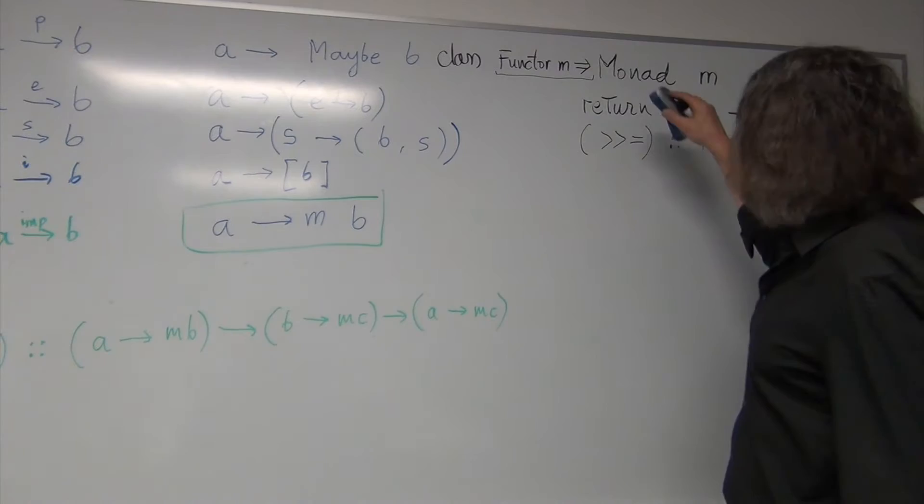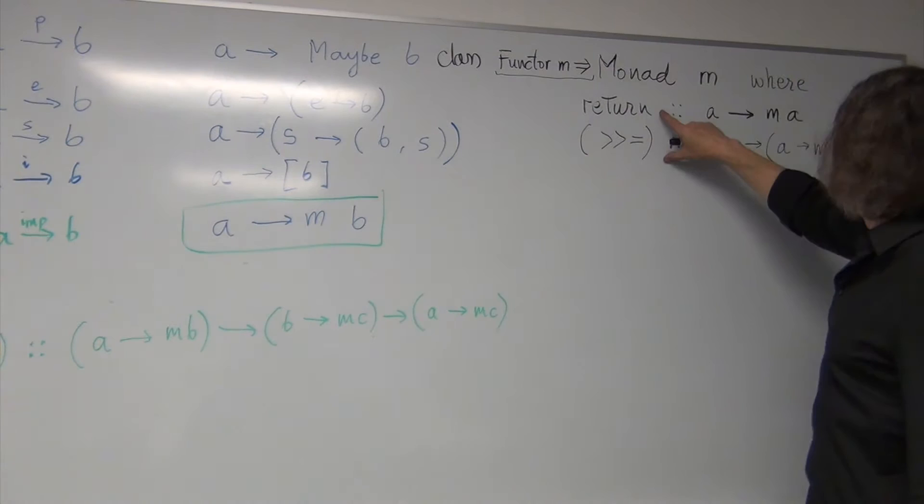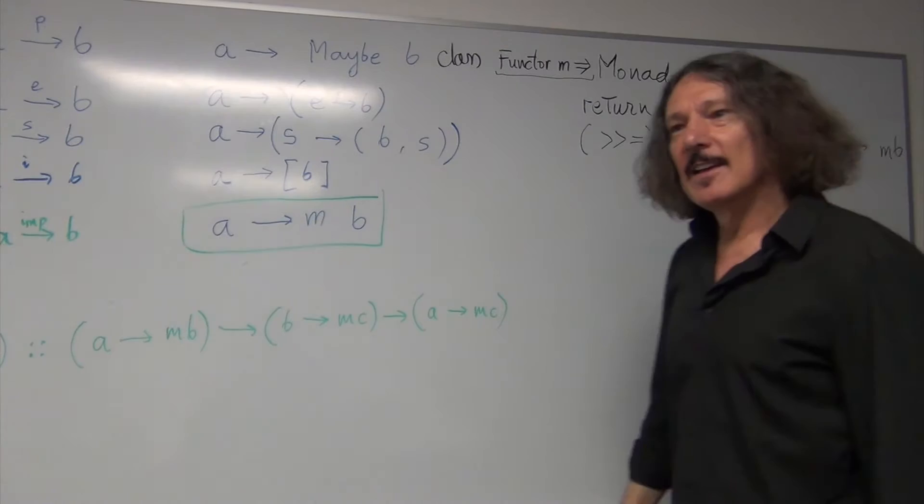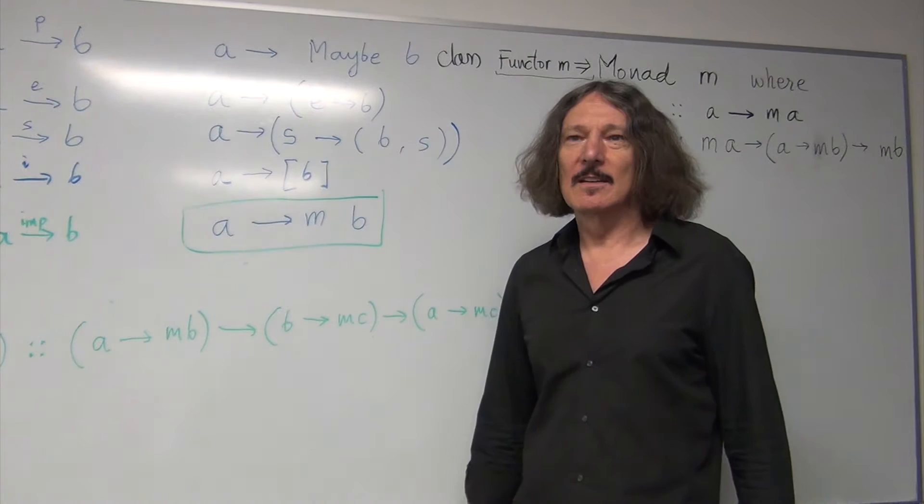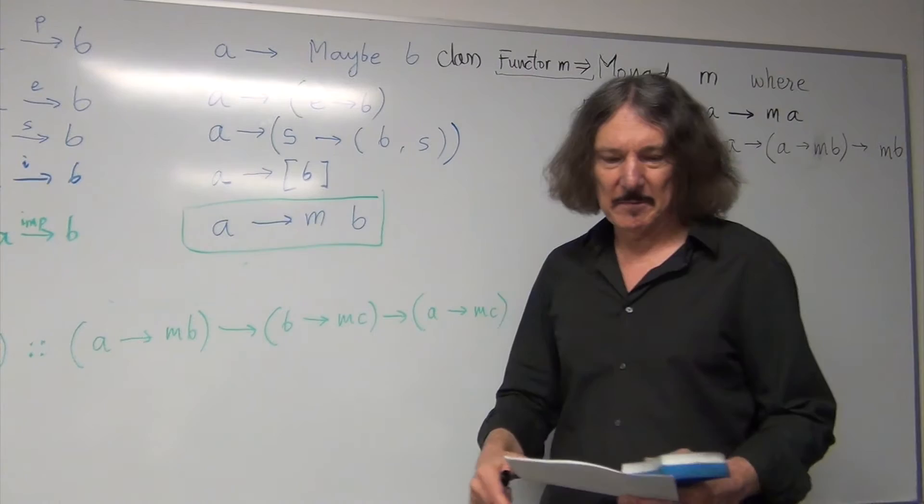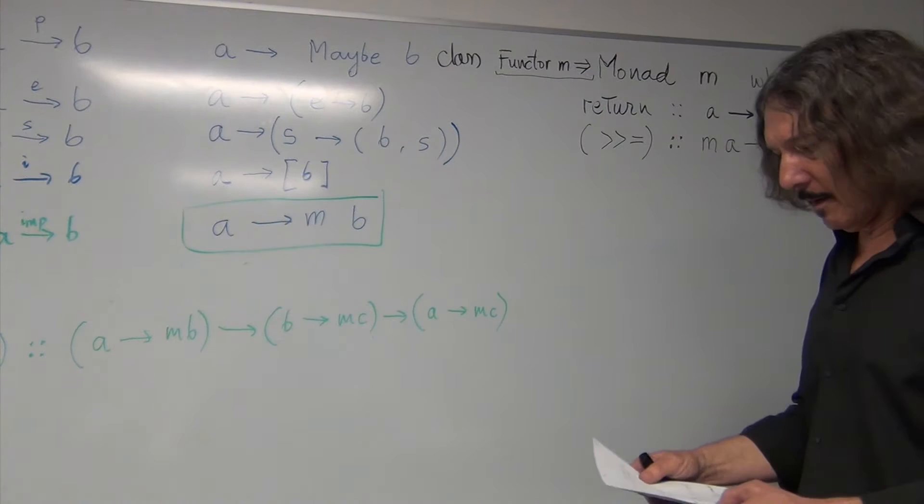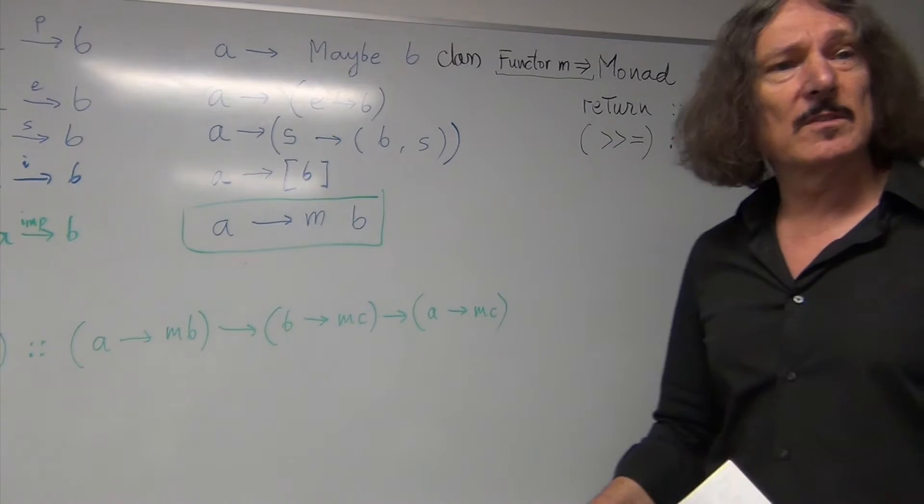So, first of all, in this case, actually we don't have to say it's a functor. Because using these two operators, bind and return, we can define fmap. And there's a trick to it. You do a little bit of tetris and you get fmap.